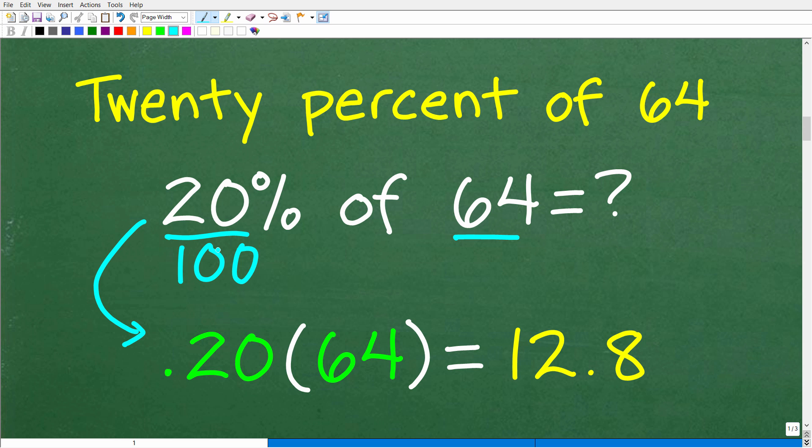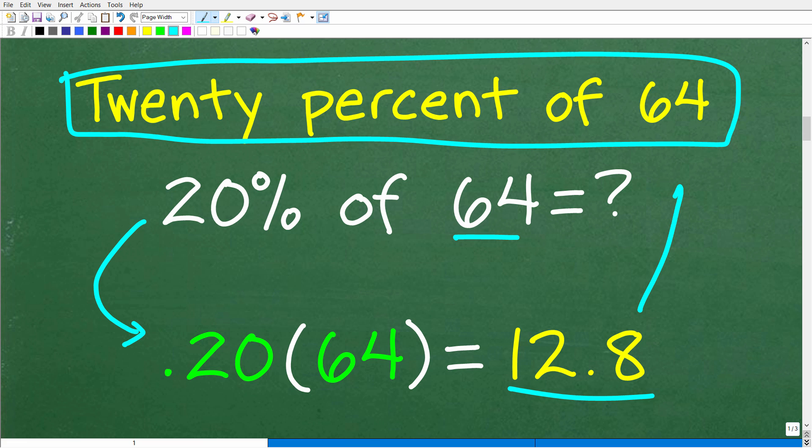How do we change a percent to a decimal? Easy. We're going to divide by 100. A lot of you might be saying, just move the decimal point over two places to the left. And indeed that's the same thing. So 20% or 20.0%, if we move the decimal point over two places to the left, that is the decimal equivalent of that percent. But when you move the decimal point over two places to the left, just so you understand, that is the result of dividing by 100. So 20% as a decimal is 0.20 and then we multiply by this number. 0.20 times 64 using our calculator is 12.8.